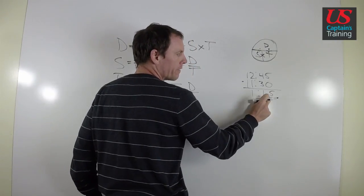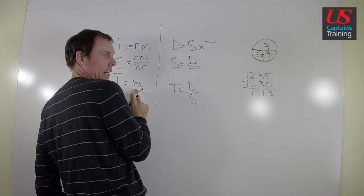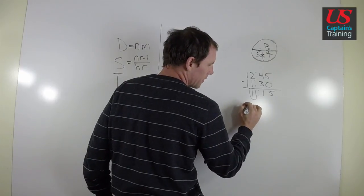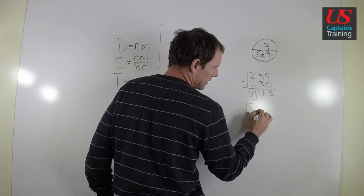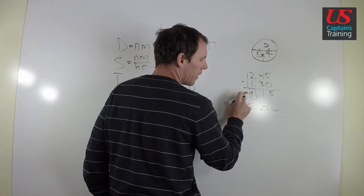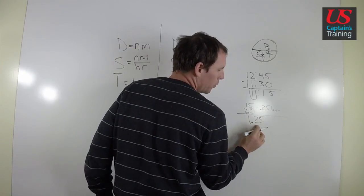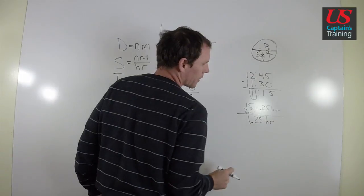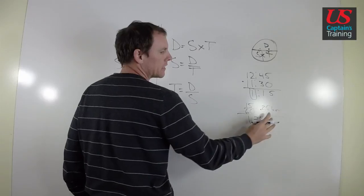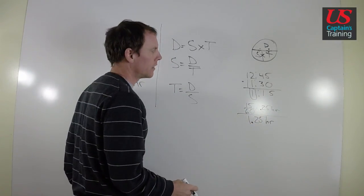This is 1 hour and 15 minutes. But if we wanted to put this time in for time, this 1 hour is okay because it's in hours. But we need to convert this 15 minutes divided by 60 would equal 0.25 hours. Now we have this 1 plus this 0.25, we have 1.25 hours. And then we would be ready to put that in here. And this is the type of time conversion we'll have to do for ETA and Speed Made Good.